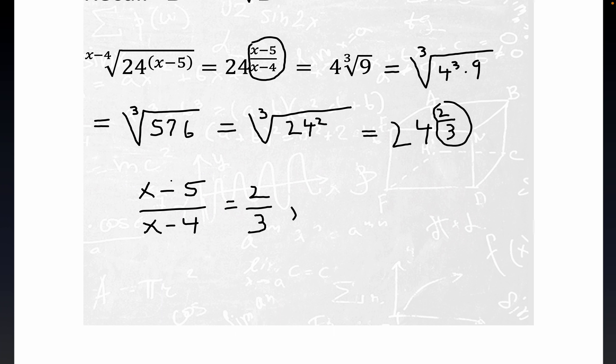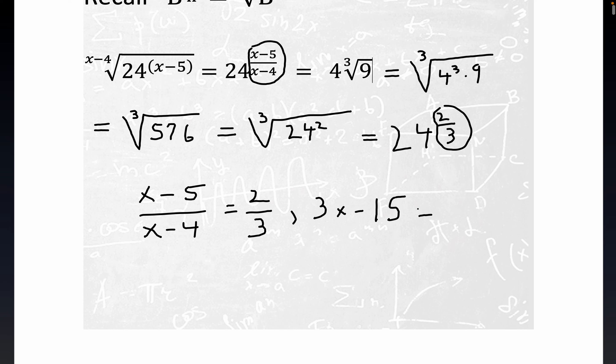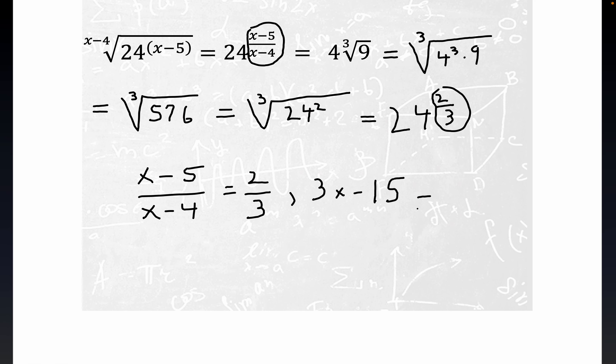That's just a property of fractions. We get three x minus fifteen. That's by cross multiplying three times x minus five. And then the next step is to multiply two times x minus four, and that would result in two x minus eight.